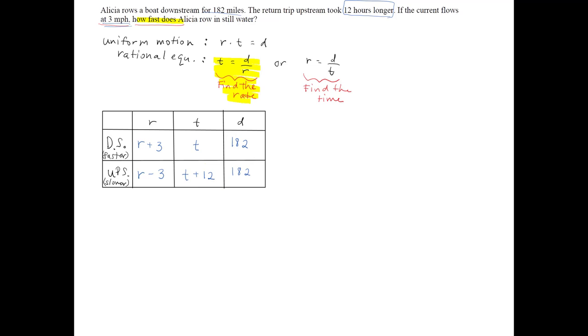Great, let's go ahead and set up our equations. So the first equation is the downstream. The time it took Alicia rowing downstream was the distance, 182, over the rate, which is r plus 3.